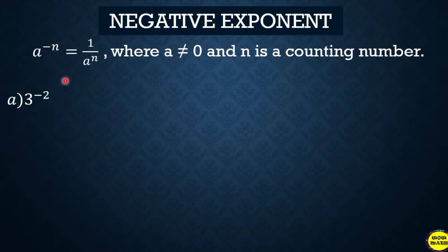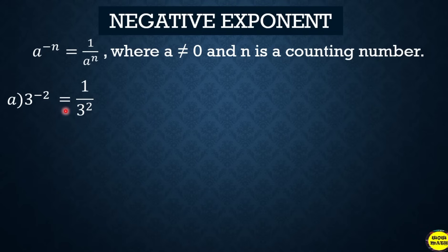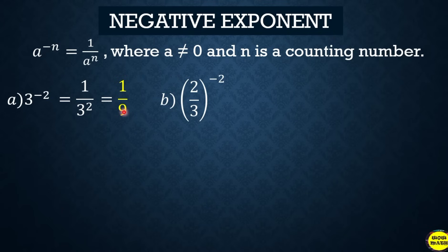Example: 3 raised to negative 2. Since the exponent is negative, we take the reciprocal — it becomes 1 over 3 squared. When the base moves to the denominator, the exponent becomes positive. Then 3 squared equals 9, so the answer is 1 over 9.